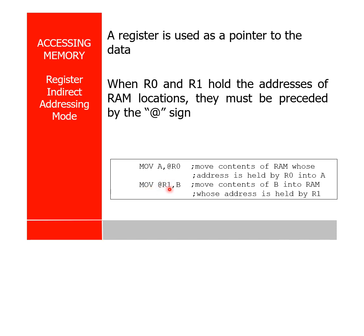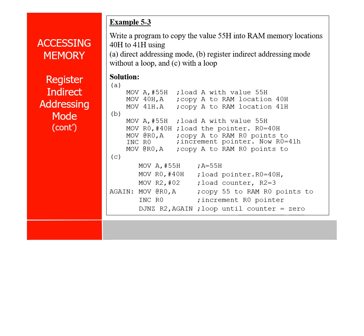Now the next example: MOV @R1, B — the data available in B will go to the memory location pointed by R1. For example, if R1 contains 30, the data in register B will go to memory location 30. That is the concept of register indirect addressing — you can move data from memory location to a register, where the memory location is pointed to by R0 or R1.